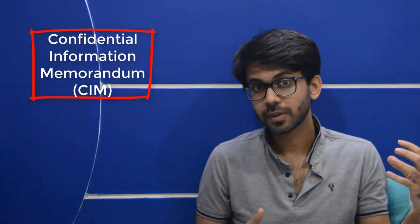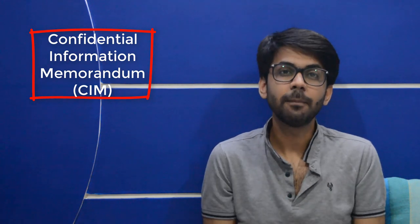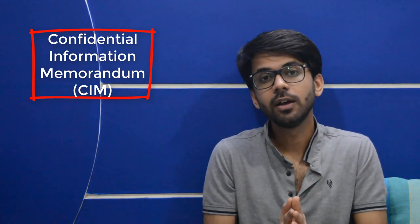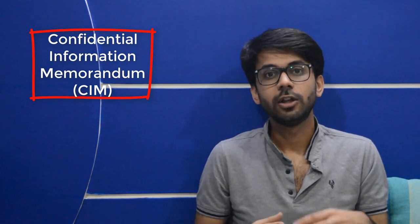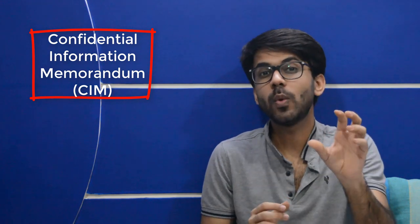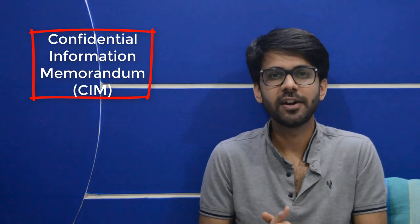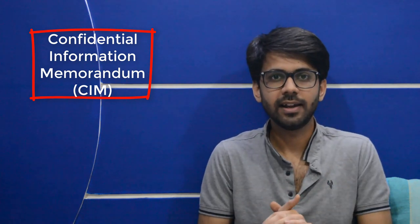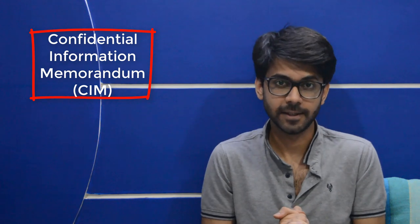All of this starts from a Confidential Information Memorandum, called a CIM. The buyer who engages an organization for an FDD assignment wants to vet whatever has been provided in the CIM, as things in the CIM are not always definitive. To carry this out, we conduct the financial due diligence process. It is a very niche and quite complicated area, but for a chartered accountant it's quite accessible.